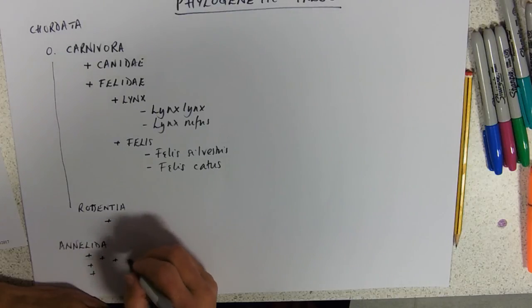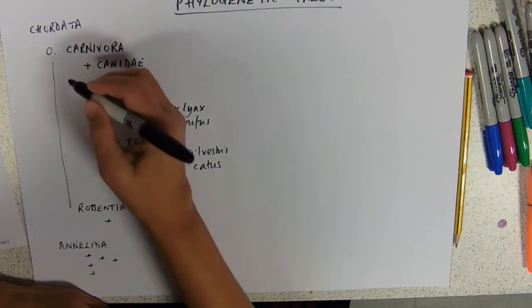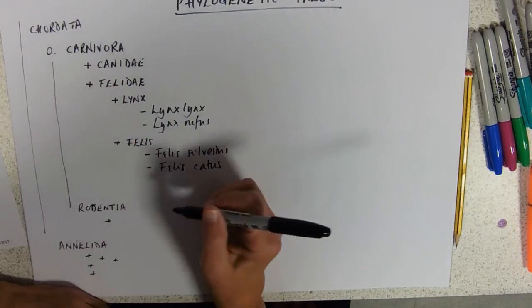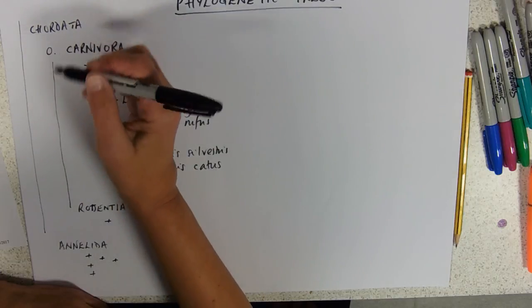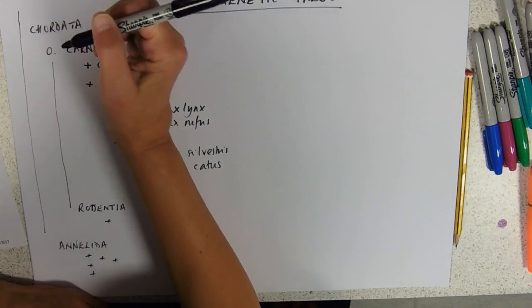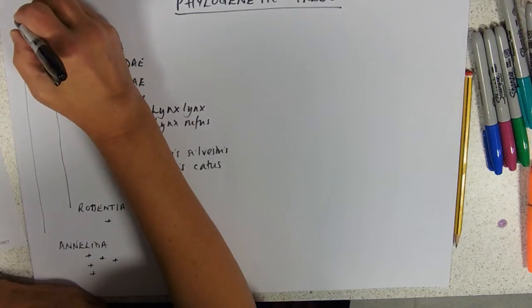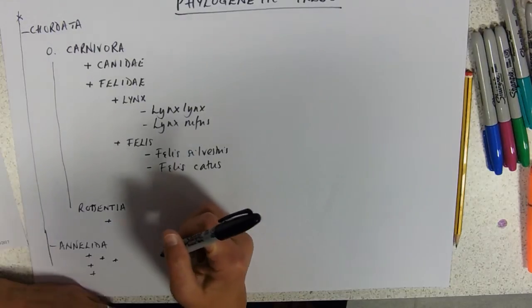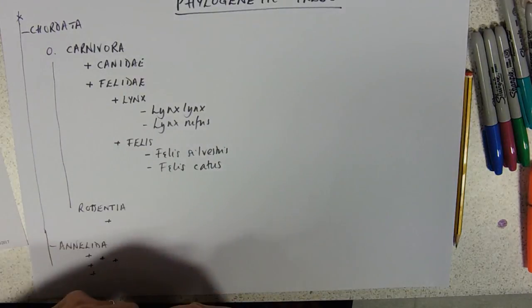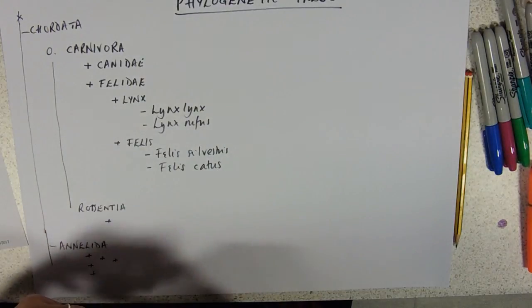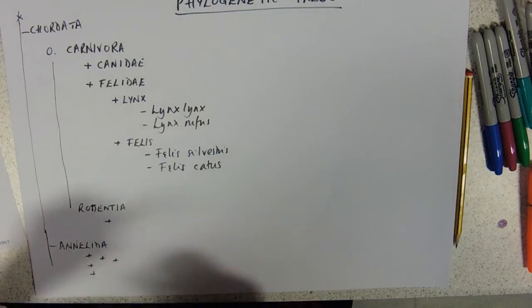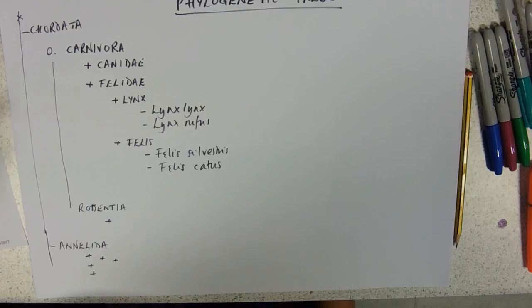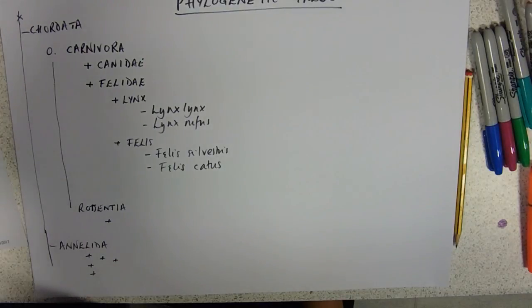And then each one's got genera and species. So, you might see it kind of like that. And you can also work out your common ancestry from there. Your common ancestors are there for the earthworm and the chordates. And I think that's probably just about long enough for phylogenetic trees. And we'll do a bit of evidencing them later on.